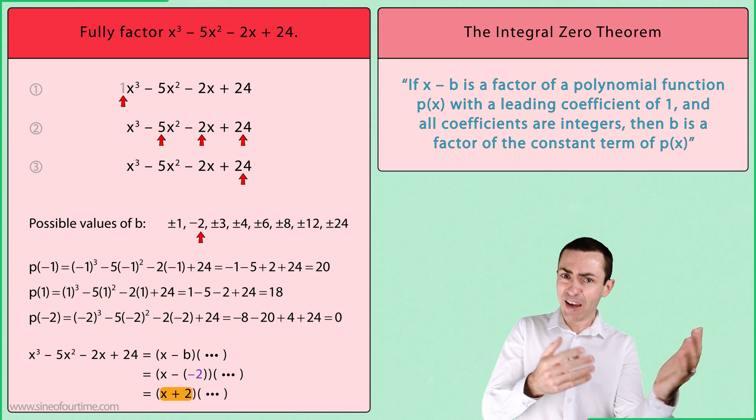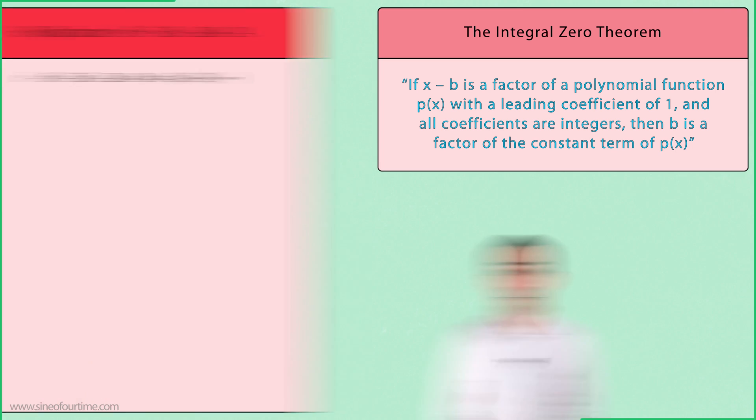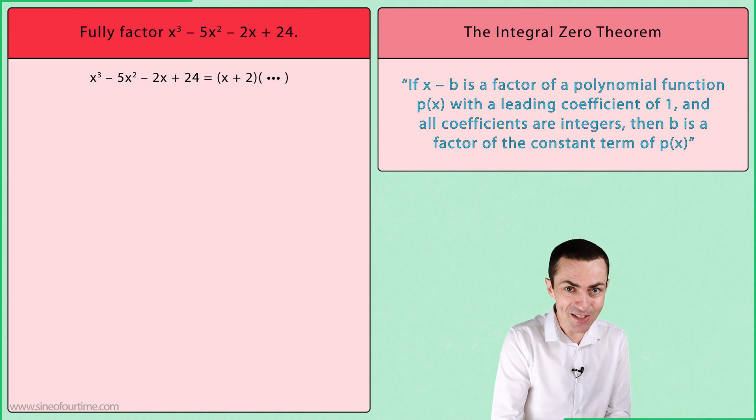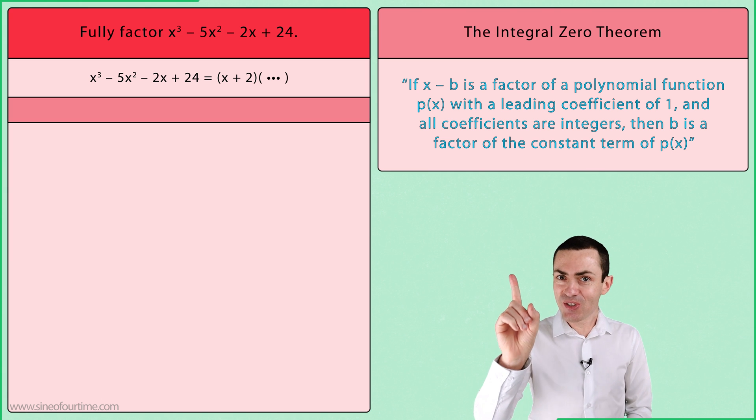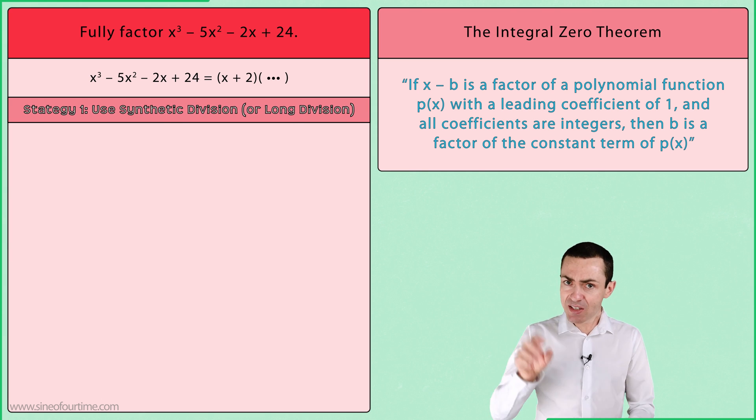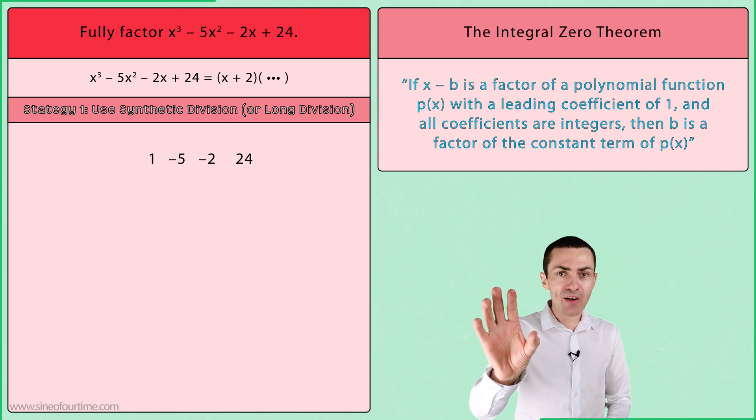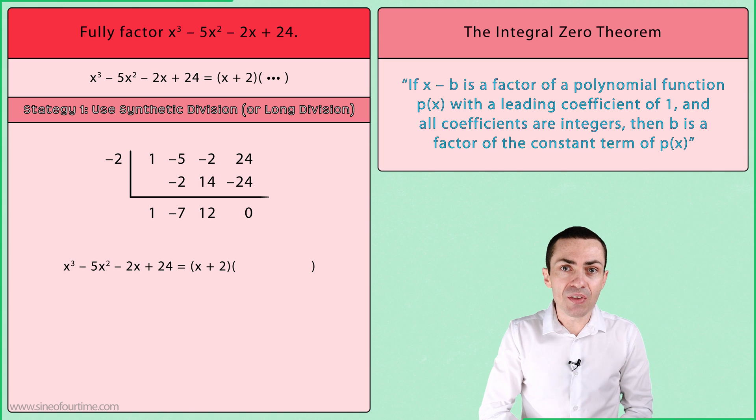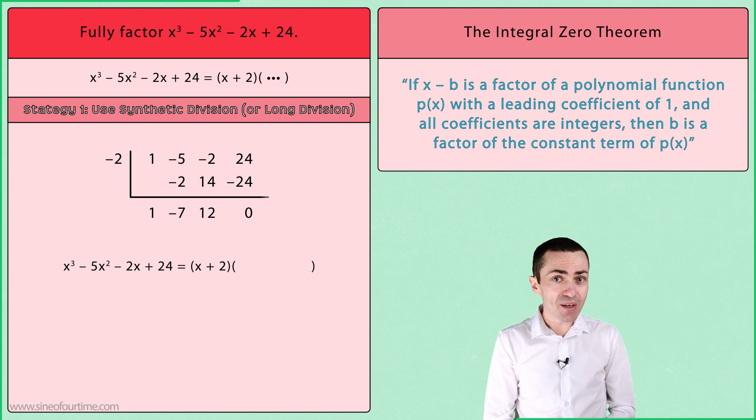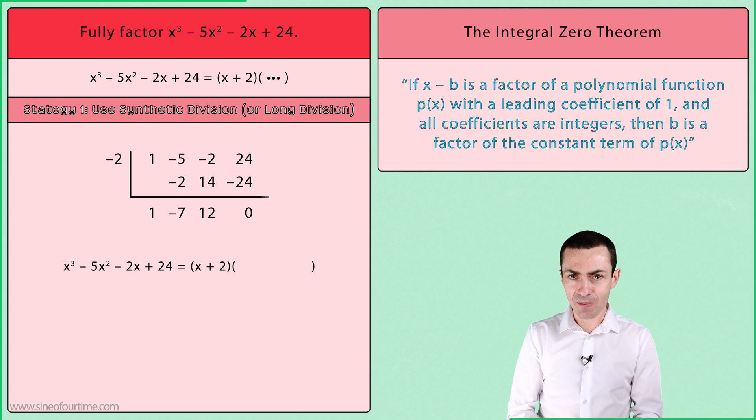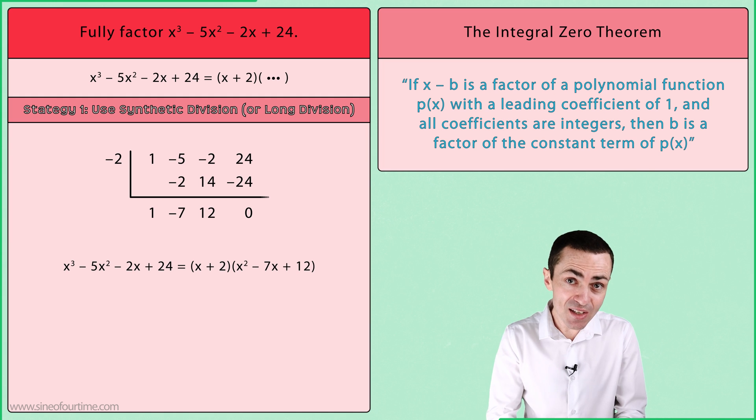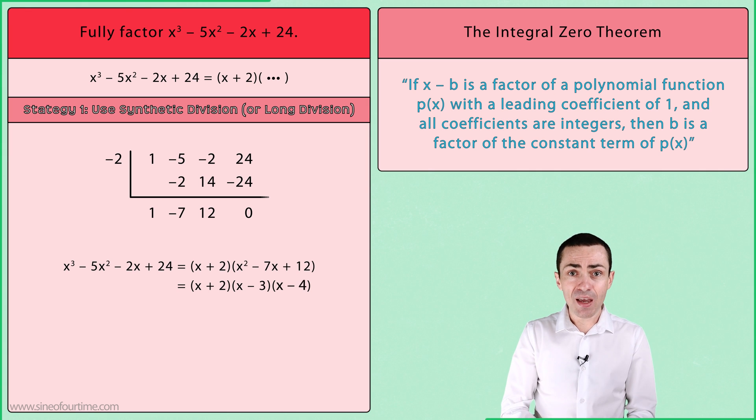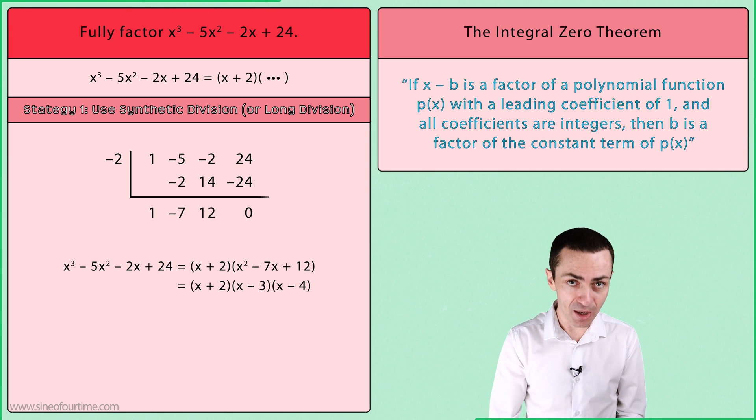But what about the other factor or factors? Well, at this stage, there are two strategies we can follow to find the remaining factors. The first is to use synthetic division or long division, where we can take that polynomial and divide it by the newly found factor, leaving us with x² - 7x + 12 as the other factor. Since this is a quadratic, we can easily factor it to give us x - 3 and x - 4, at which stage we have fully factored this polynomial.